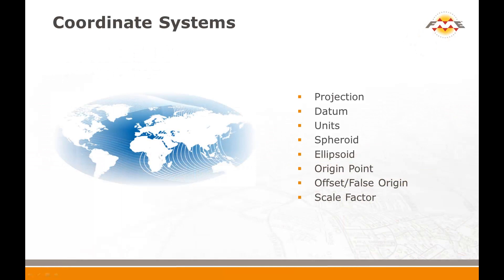A coordinate system is a way of referencing data in relation to a known space. In most FME-related cases, this space is the Earth itself. Often the term coordinate system is synonymous with the term map projection, but there is a lot more to it than that. Besides a projection, a coordinate system is also defined by a datum, for example WGS84, coordinate units, for example feet or meters, a particular spheroid and/or ellipsoid, an origin point, optionally an offset or false origin, and also a scale factor. FME incorporates all of these concepts into its coordinate system support.